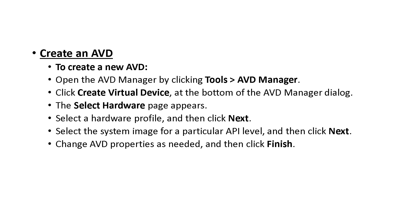Now let's see how to create an AVD, Android Virtual Device. To create an AVD, open AVD Manager using Tools and then AVD Manager. Click Create Virtual Device, select the Hardware Profile, select the image, change the AVD Properties, and then click Finish. This is the way how to create an AVD.